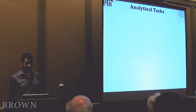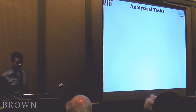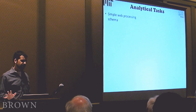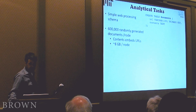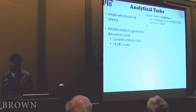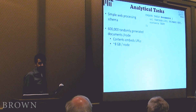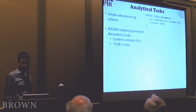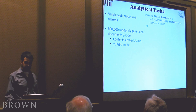Now let's go on to the analytical tasks — these are tasks more optimized for a database system. We picked a simple web processing schema. The data consists of a collection of documents meant to represent HTML documents, with about 600,000 documents per node. Each document consists of a URL, which is a 100-character string, and a blob of text called contents which embeds URLs. The total size is about 8 gigabytes per node.